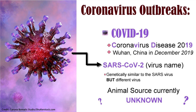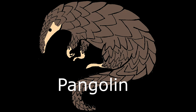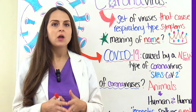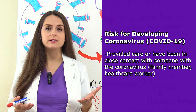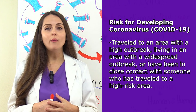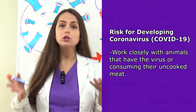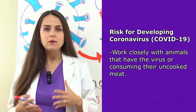There are some theories that this possibly came from an animal market in Wuhan, China — like maybe seafood — or there's another theory that it possibly came from a pangolin, which is a type of anteater. Things that increase your risk include: providing care or being in close contact with someone who has the virus, traveling abroad to a high-outbreak area, living there, or having been in close contact with someone who returned from a high-outbreak area. Working closely with animals that carry these viruses and consuming their improperly cooked meat could also increase your risk.